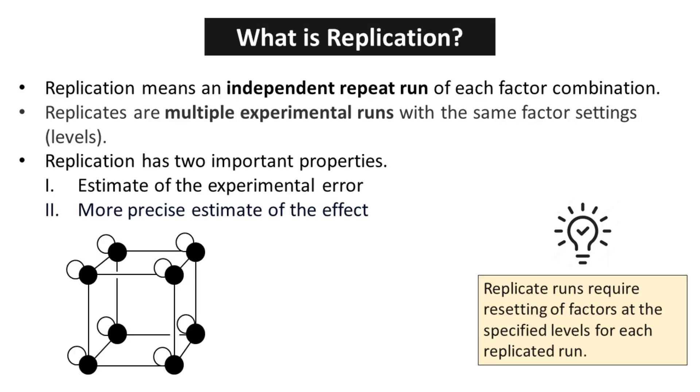Replication, in the context of experiments and studies, holds two important properties that are essential for the advancement of knowledge and understanding in any field. The first property is the estimate of the experimental error. The second property of replication is the more precise estimate of the effect. Through replication, researchers can not only validate the initial findings but also refine and enhance the accuracy of the effect being studied.